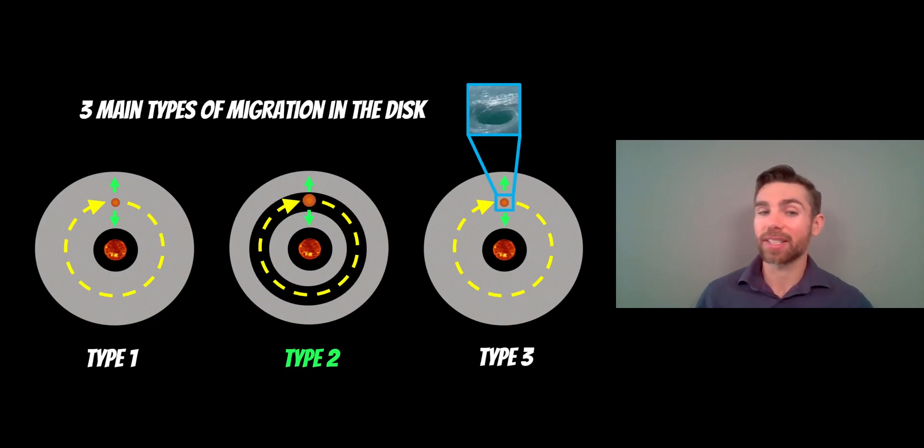Type 3 is the same as type 1, the same size planets but these disks have vortices in. It's turbulent and they are interacting with those vortices and that basically gives a slightly different method or way that they actually migrate in the disks.